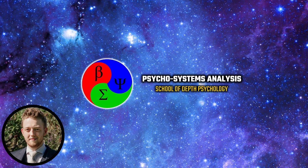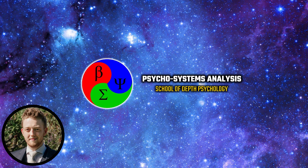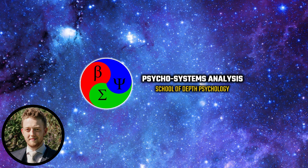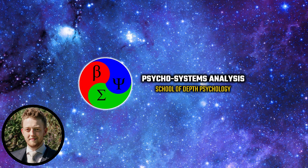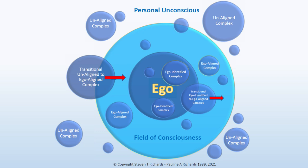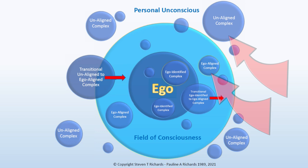Complexes, as an update to the original Jungian concept through clinical empiricism and insights from the biosciences, make up much of the therapeutic work within Steve and Pauline's psychosystems analysis model of depth psychology. The descriptor of complex covers a wide bandwidth of presenting phenomena. They can vary significantly in clinical presentation and relative position to the ego. Within psychosystems analysis, they are usually characterised via taxonomy as either identified — that is, within the self-concept — aligned, that is in an active relationship to consciousness, or non-aligned,